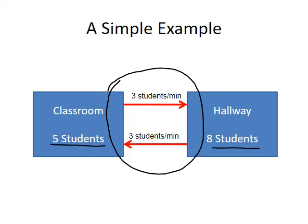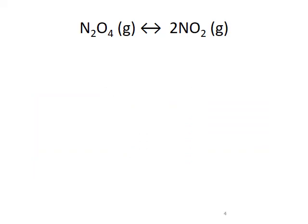Now let's look at a reversible chemical system. The double arrow pointing in both directions between the reactants and products indicates that this process is reversible. In the forward direction, one molecule of dinitrogen tetroxide (N2O4) decomposes to produce two molecules of nitrogen dioxide (NO2). In the reverse direction, two molecules of NO2 combine to form one molecule of N2O4. Both the forward and reverse processes have rates associated with them, which we can characterize using rate laws.